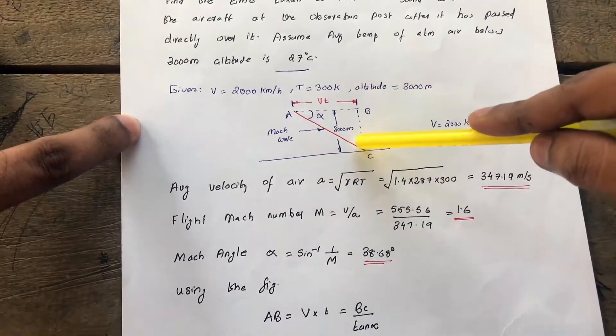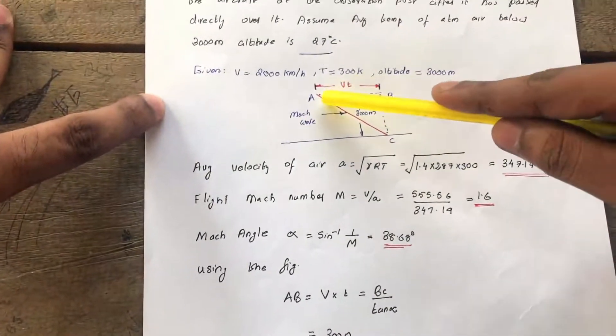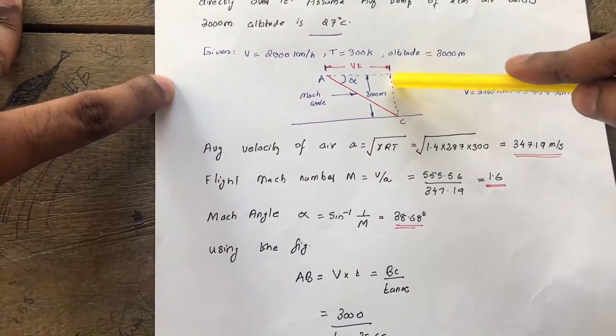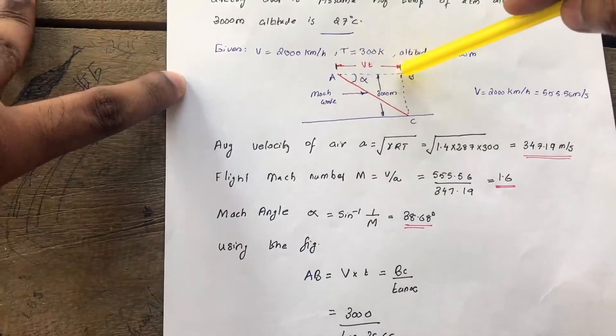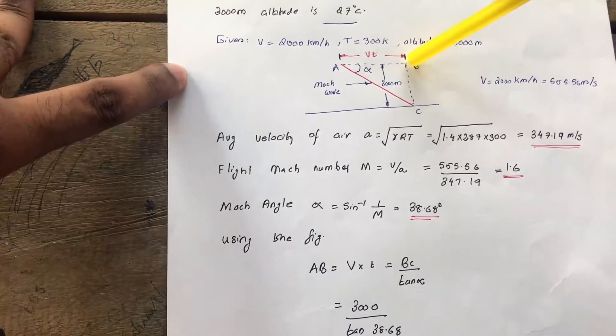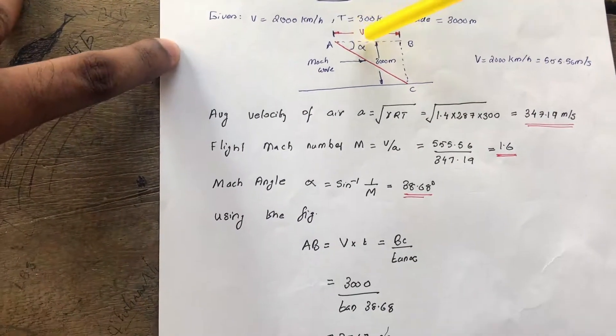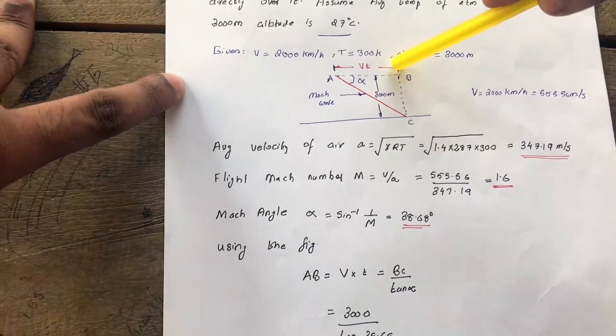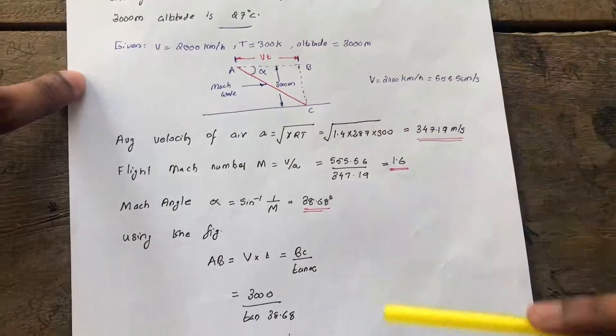From this figure, we can find out the value of AB. AB equals V into t. This is the distance traveled by the flight, also equal to speed into time: V into t. We know the velocity. Time is what we have to find out. So if we find the distance AB, we can find out the time taken.